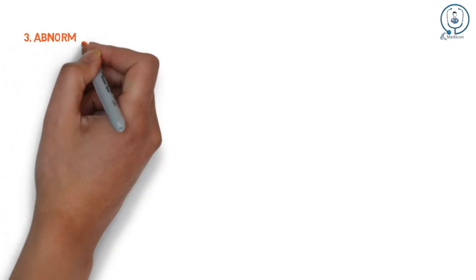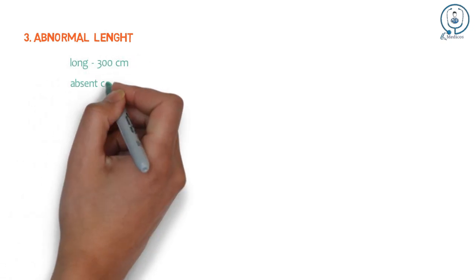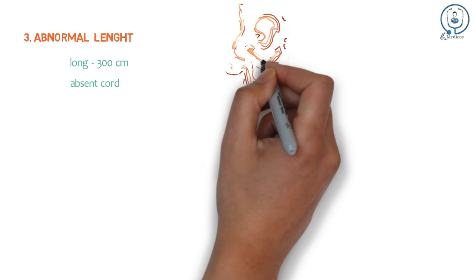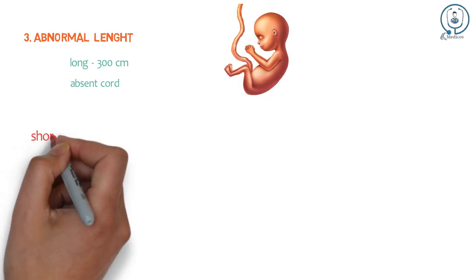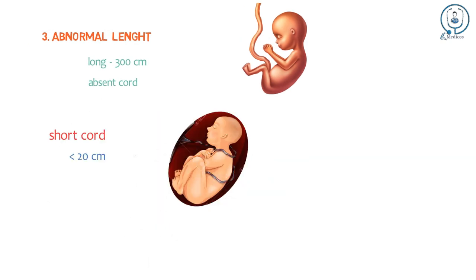Abnormal Length: The cord may be unduly long or absent. Short Cord may be true, less than 20 cm or 8 inches, or commonly related to entanglement of the cord.